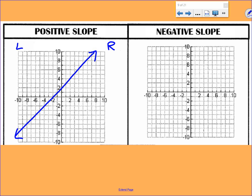Negative slope is the opposite. From left to right, you're going down the mountain. Go ahead and copy those down on your piece of paper.